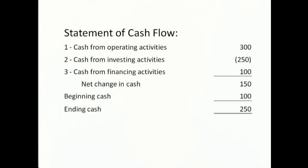The operating section shows how cash was generated from the business operation. The investing activities section shows the amounts of cash that were used to purchase assets, such as land and equipment, as well as the cash that was received from the sale of assets. The financing section shows financing activities, such as cash that was received from borrowing money, as well as paying the money back.